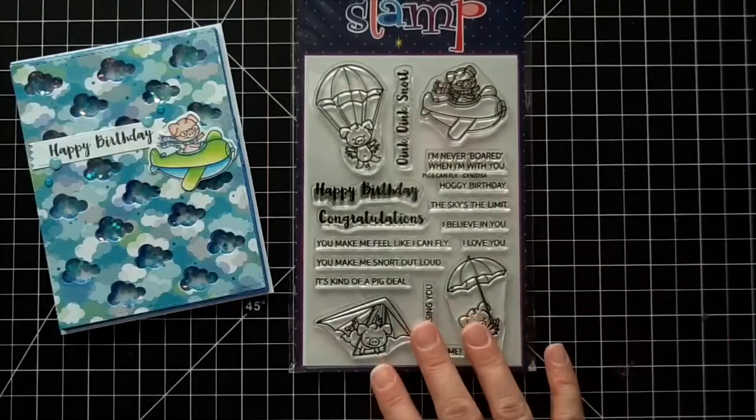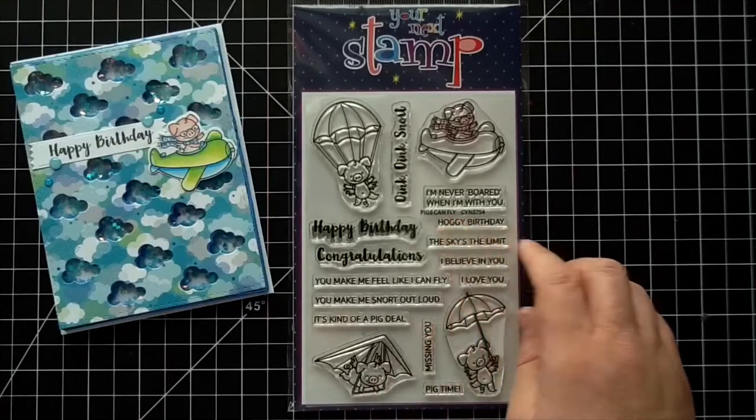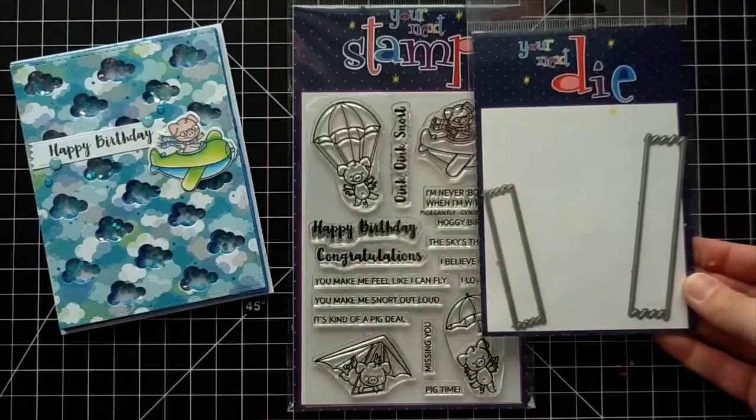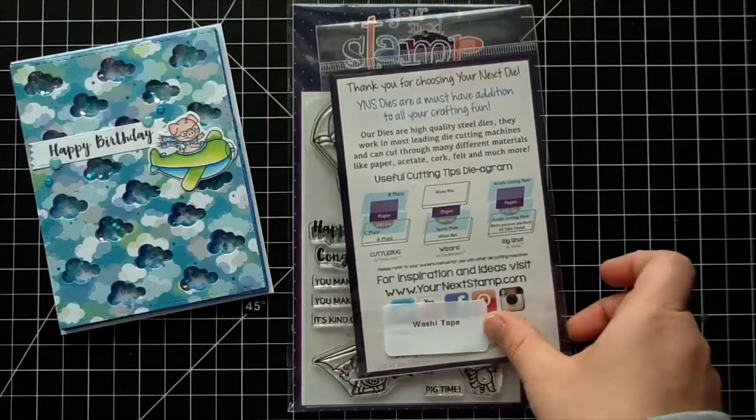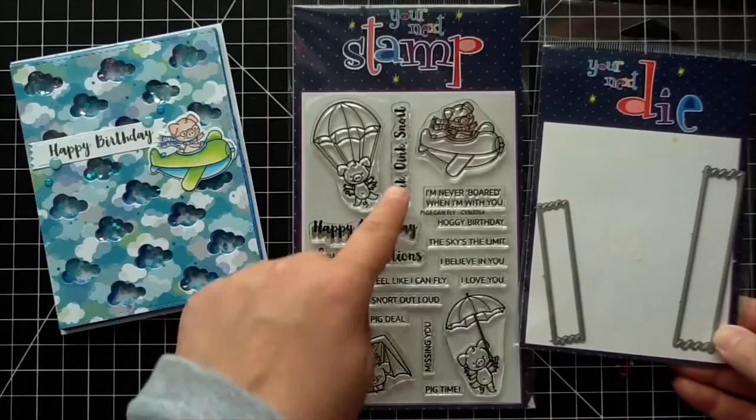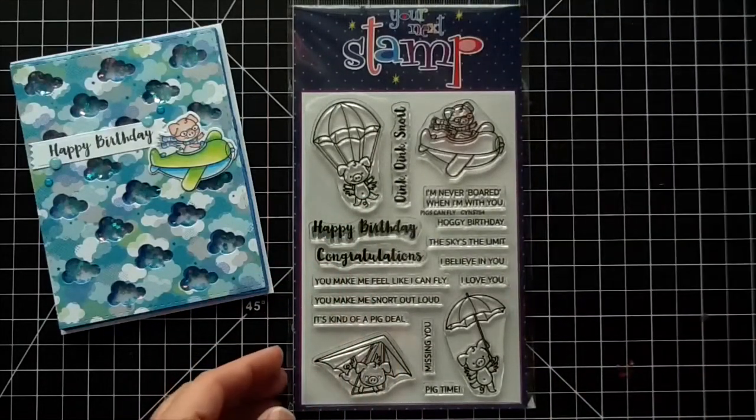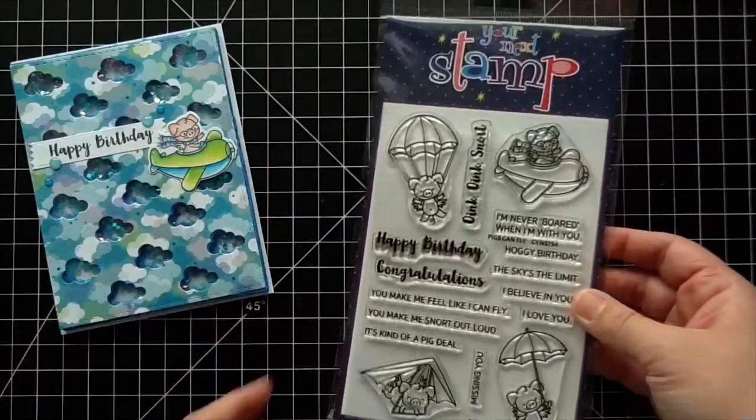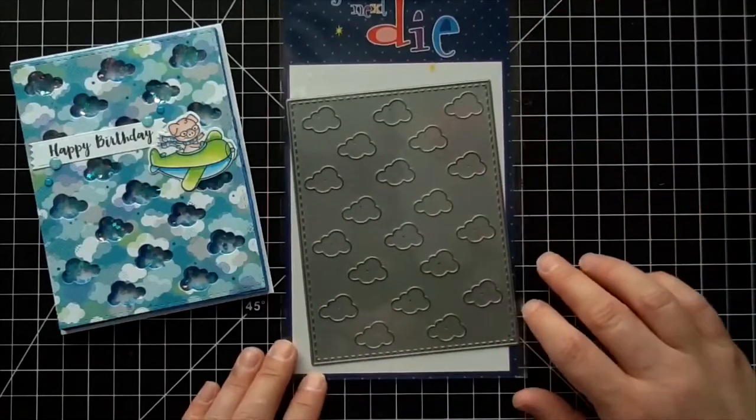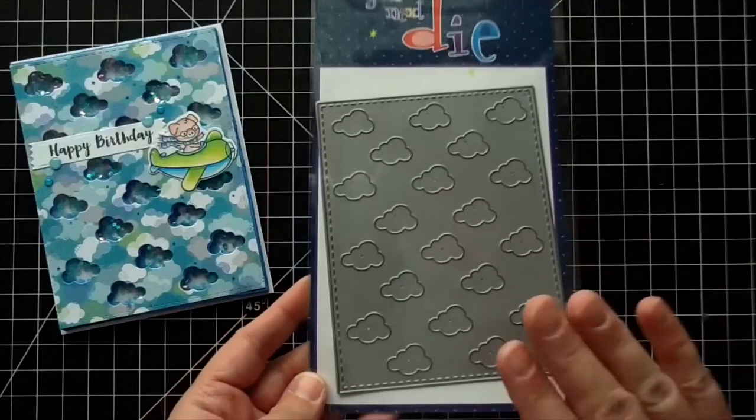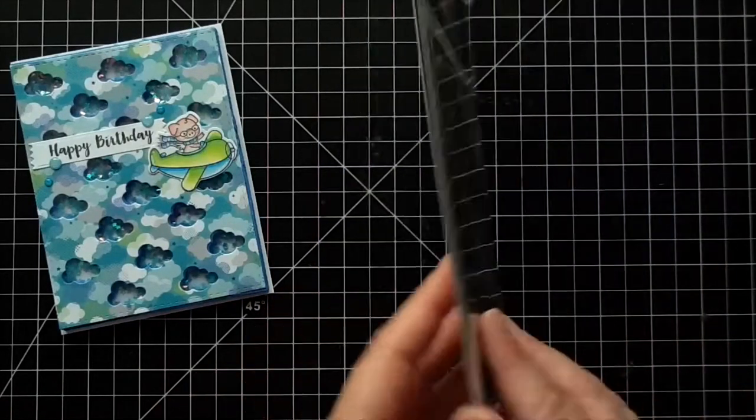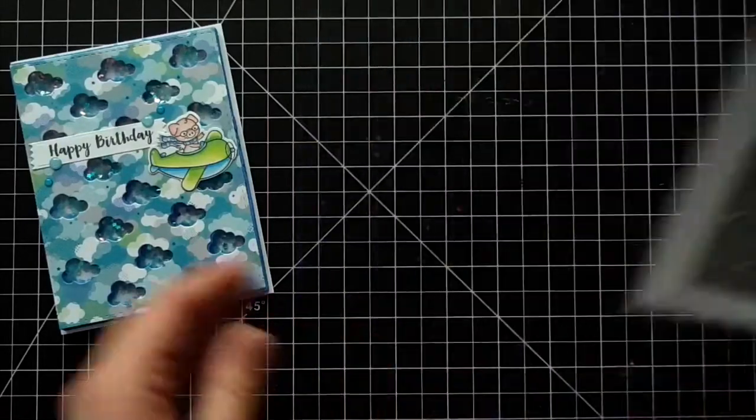For the stamp set for this week, I use Pigs Can Fly. It's so cute. These little sentiment banners matched perfectly with this little plane, reminding me of those banners that fly behind airplanes with messages. I thought it'd be so cute to use that tiny washi banner. It fits the happy birthday, congratulations, and the snort snort or oink oink snort sentiment. I used the coordinating die to cut out the little piggy. The cloud panel die is absolutely gorgeous. I think it'd be so precious for a spring card or baby cards.